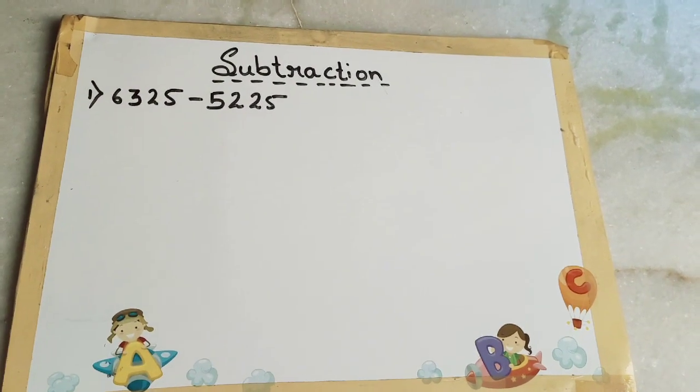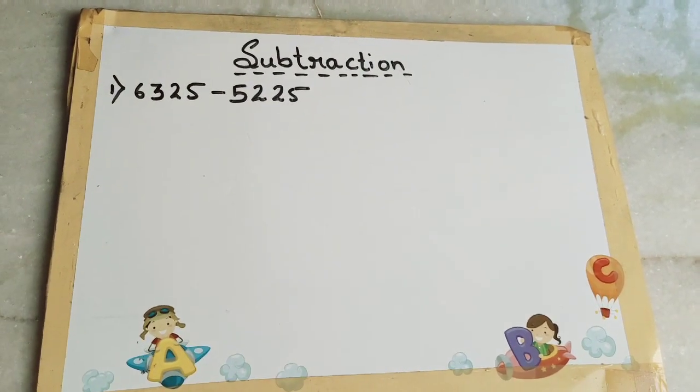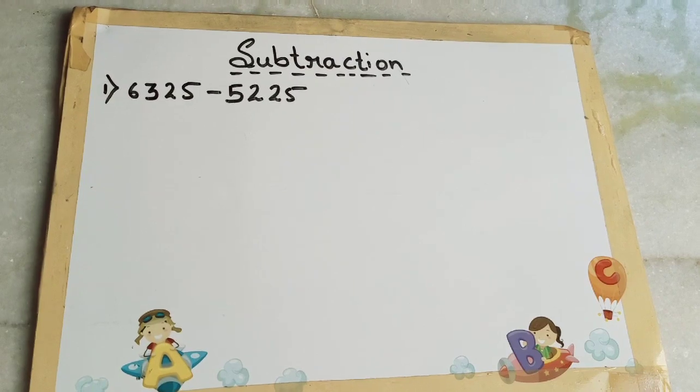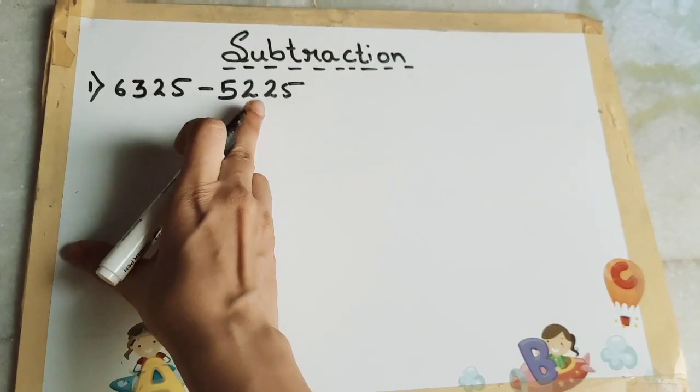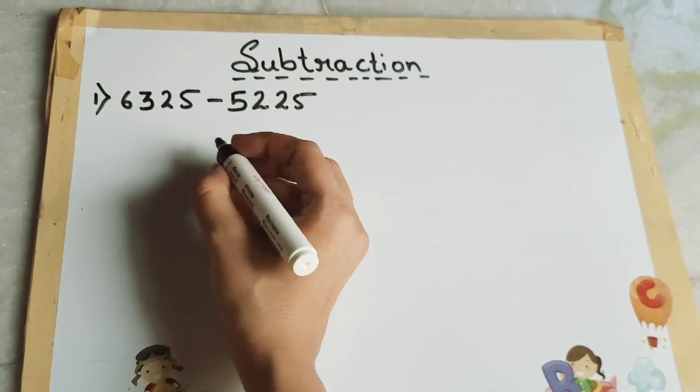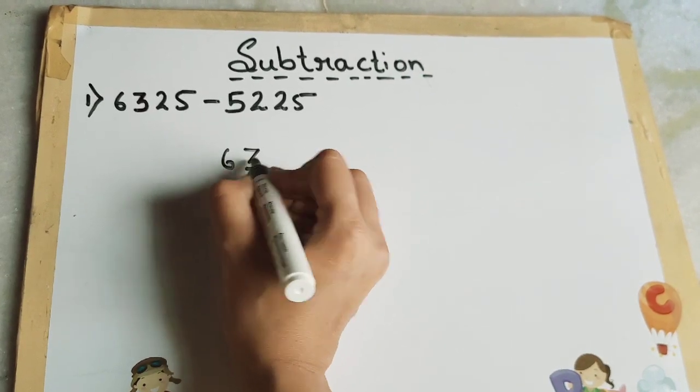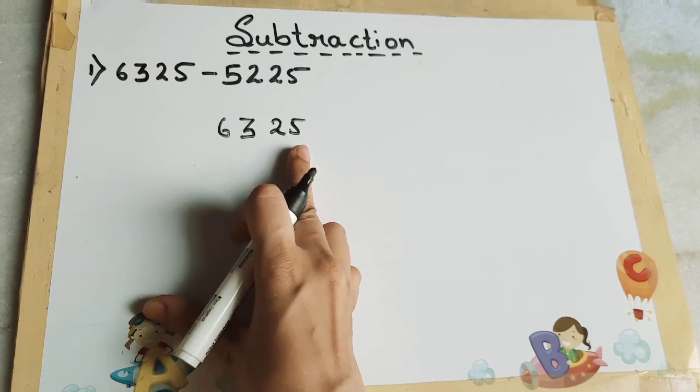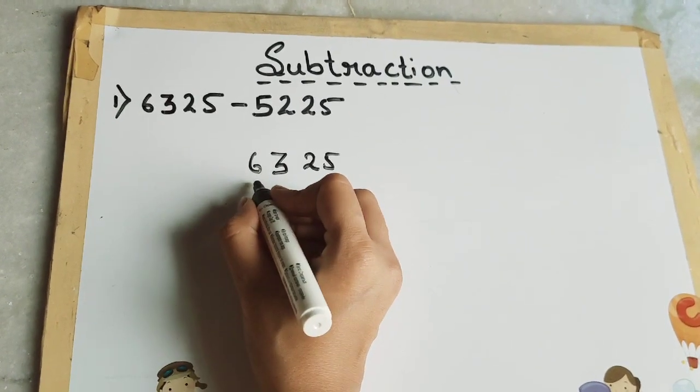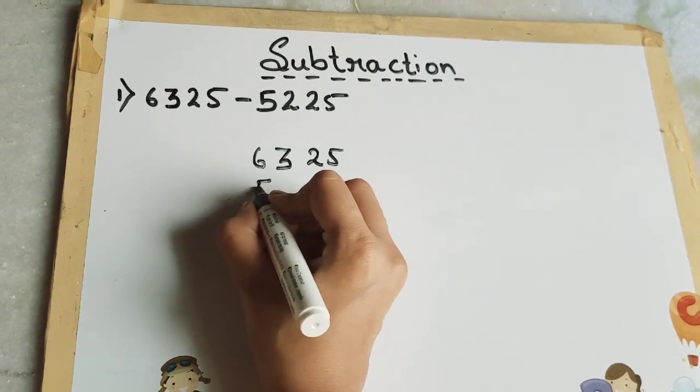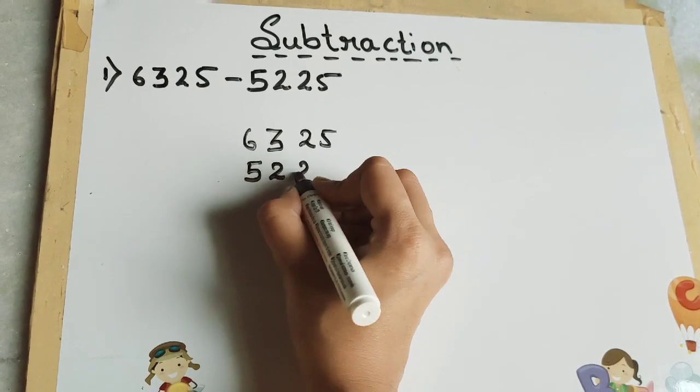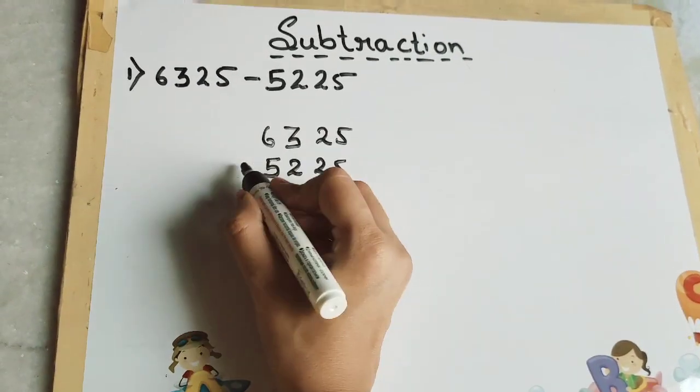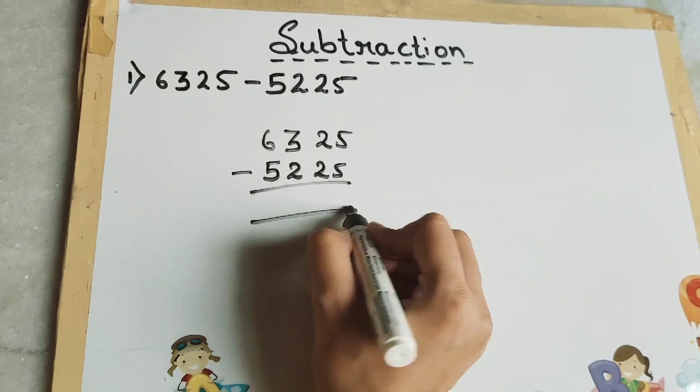Okay students, today you will learn subtraction. First, see there are two numbers. We will write the first number, 6325. Now we will write the second number below this, 5225. Now we have to subtract.